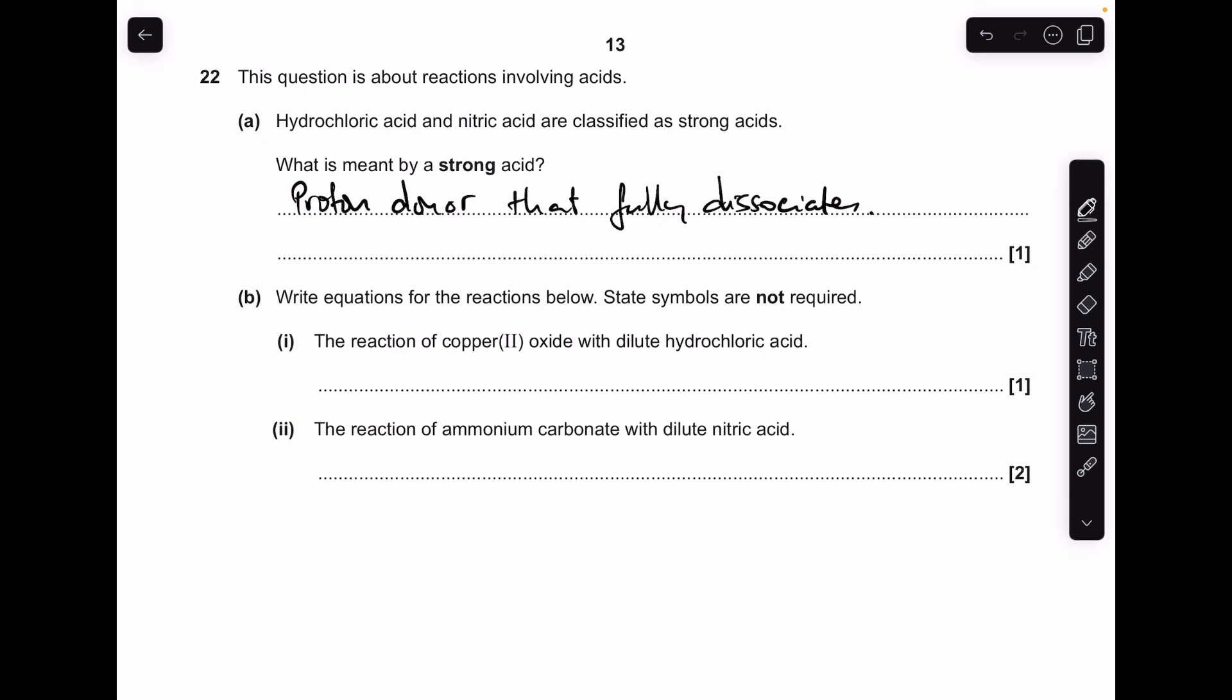Moving on to the reactions of acids in part B. The first one is copper(II) oxide with dilute hydrochloric acid, so we're going to get copper(II) chloride and water for that one. And ammonium carbonate with dilute nitric acid, so we're going to get ammonium nitrate, water, and carbon dioxide.